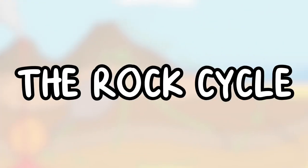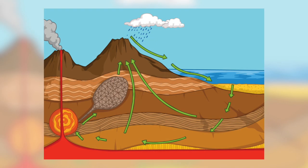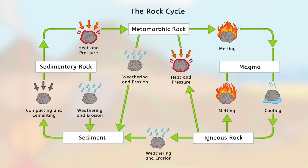The rock cycle. Rocks are always changing. Over millions of years, rocks can transform into different types through a natural process called the rock cycle. Here's how it works: igneous rocks break down into tiny pieces forming sediments. These sediments get buried and pressed together, forming sedimentary rocks. If heat and pressure are high enough, sedimentary rocks turn into metamorphic rocks. If metamorphic rocks melt, they become magma. When magma cools, it forms igneous rocks, and the cycle starts all over again.